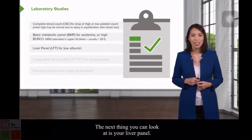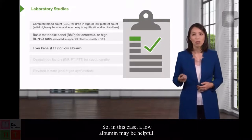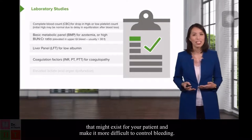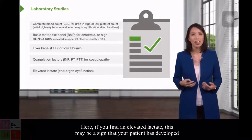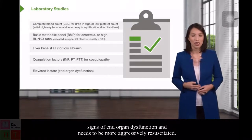Next, check your liver panel, looking specifically for signs of impaired liver synthetic function — a low albumin may be helpful. Always check coagulation factors to look for any coagulopathy that might make it more difficult to control bleeding. And lastly, consider checking a lactate. An elevated lactate may be a sign that your patient has developed end organ dysfunction and needs to be more aggressively resuscitated.